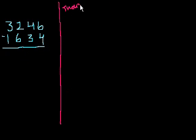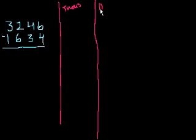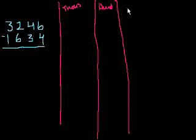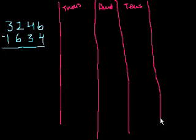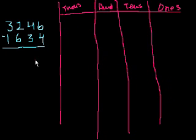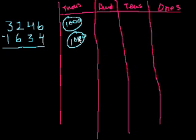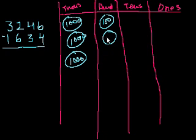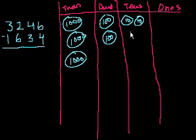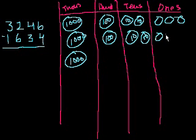So this is the thousands, this is the hundreds, this is the tens, and this is the ones. Let's draw the top number: 3,000 — so 1,000, 2,000, and 3,000. Then 200 — so 100, 200. Then 40, so that's four tens: 1, 2, 3, 4. And then 6 ones: 1, 2, 3, 4, 5, 6.